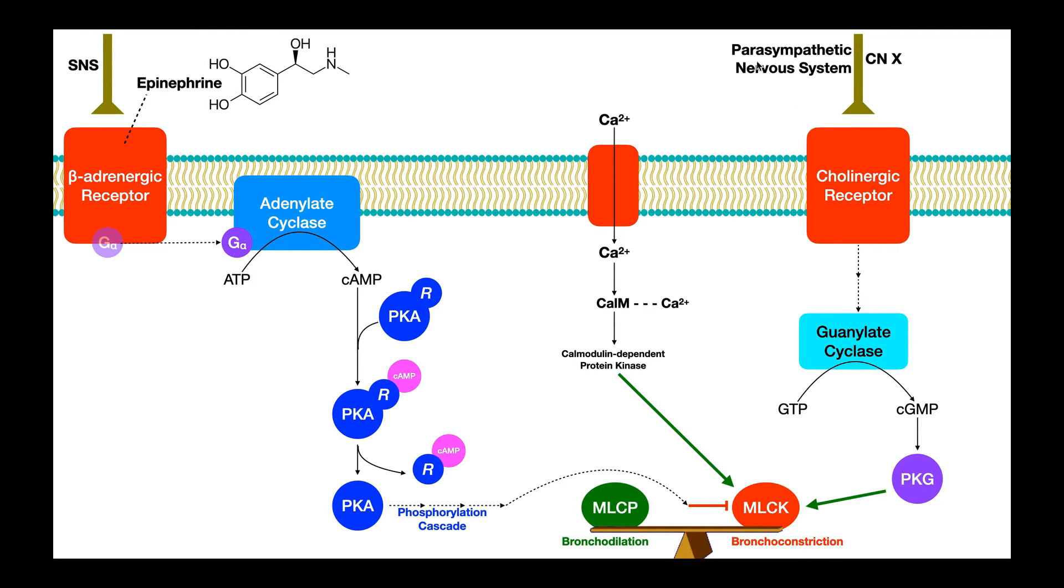The first one of these two pathways is going to be that of the parasympathetic nervous system. So the parasympathetic nervous system mainly operates, at least in this region of the body, through cranial nerve 10, which is the vagus nerve. And so the vagus nerve extends some of its branches here to the bronchial cell membranes, where there are cholinergic receptors.